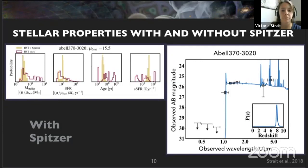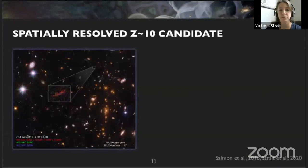With that in mind, my job has been to add Spitzer to the RELICS sample for the 300 galaxies that already have HST data. I'm going to highlight a few cool galaxies that we've found.